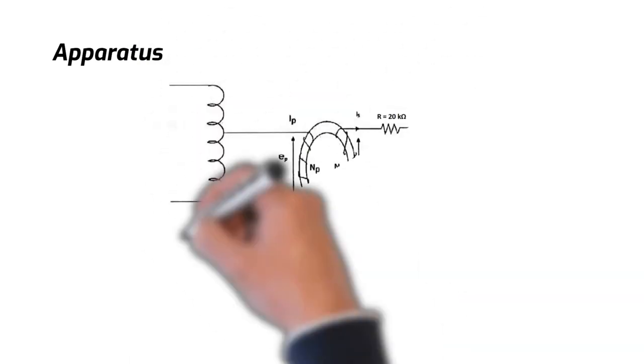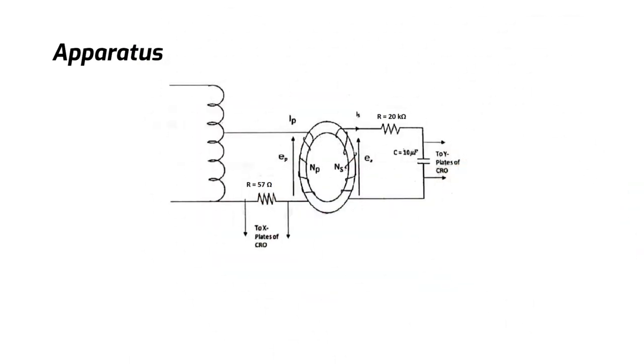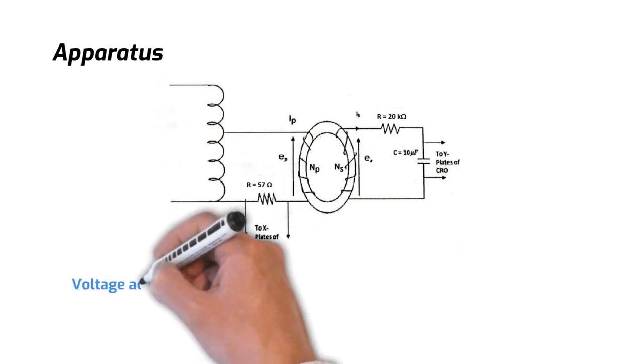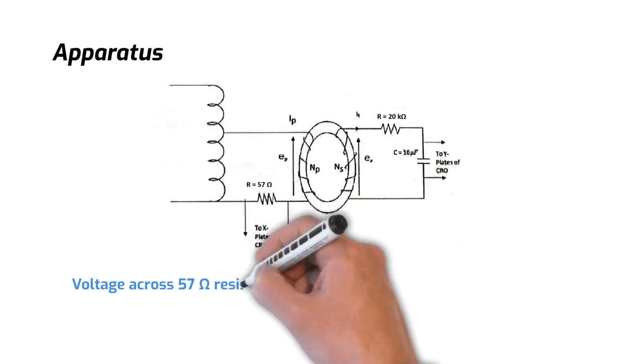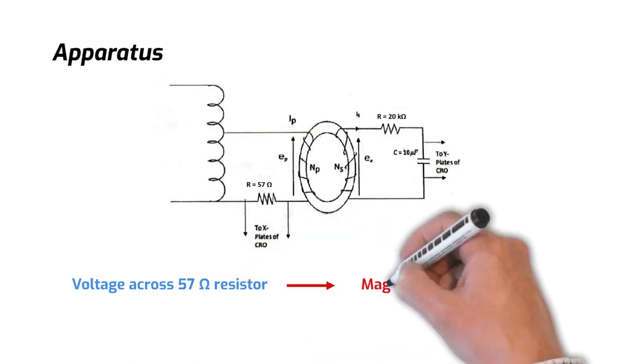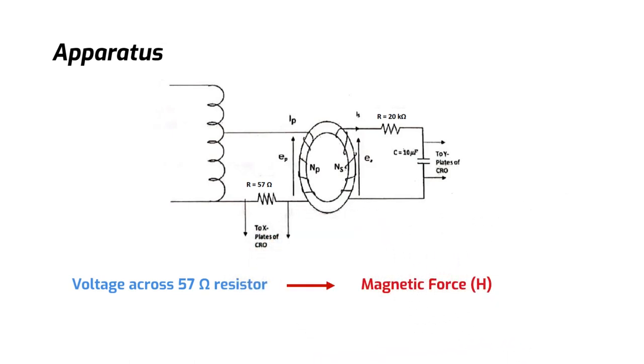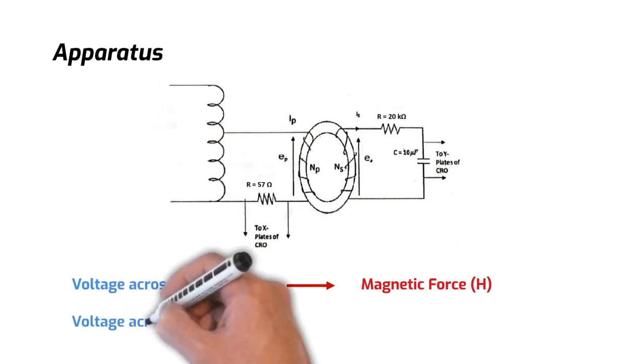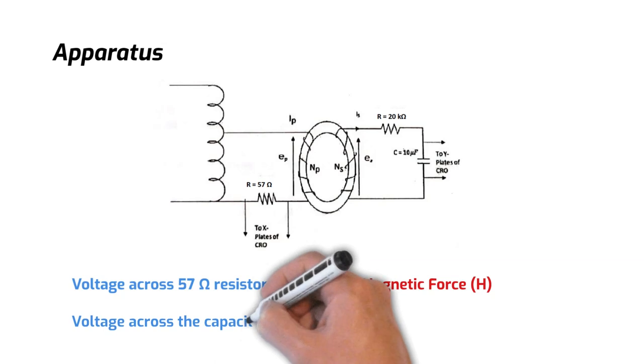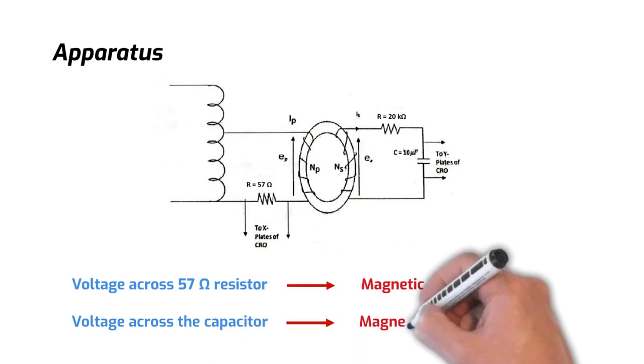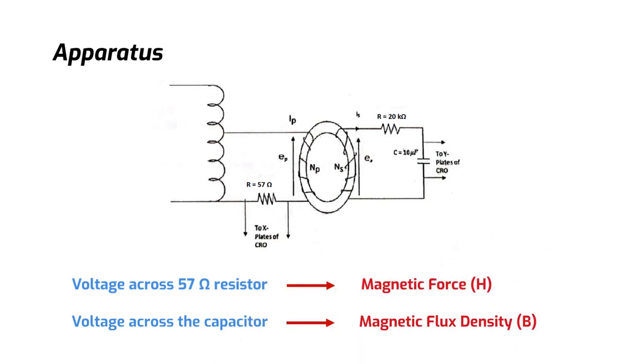Here's the apparatus. Referring to the figure, since the magnetizing force H is proportional to the ampere turns, the voltage across the 57 ohm resistor is proportional to H and is applied across the X plates of the oscilloscope. The potential difference across the capacitor is proportional to the instantaneous flux and hence to the flux density B, which is applied across Y plates of the oscilloscope.